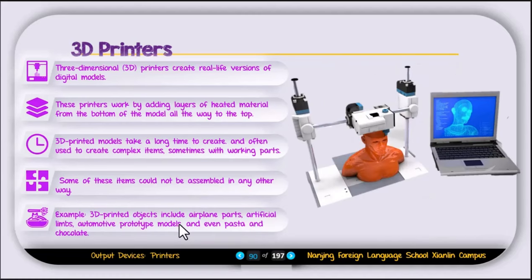Examples of 3D printed objects include airplane parts, artificial limbs, automotive prototype models, and even pasta and chocolates. To use a 3D printer, you install specific 3D software on a laptop, create a model in that software, then feed the model to the printer, which creates the same object.